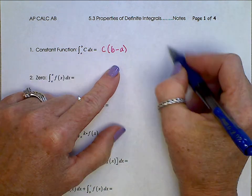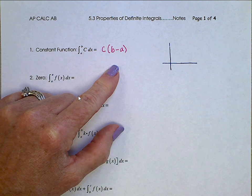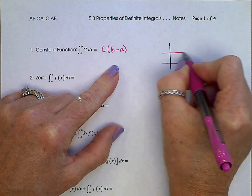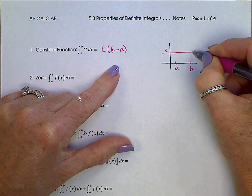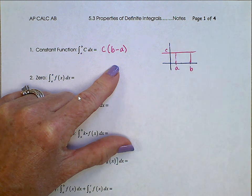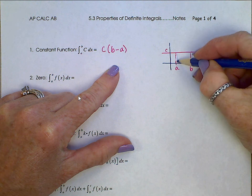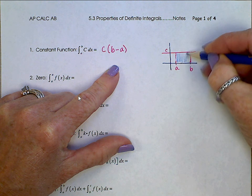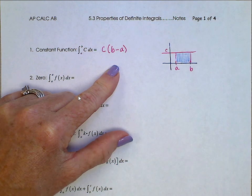Recall this was because when we sketched this graph, we had a horizontal line at a height of C over an interval from A to B, which gave us this rectangle in here, height C, width B minus A.